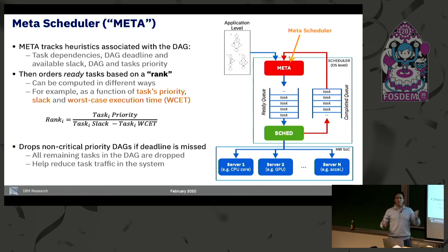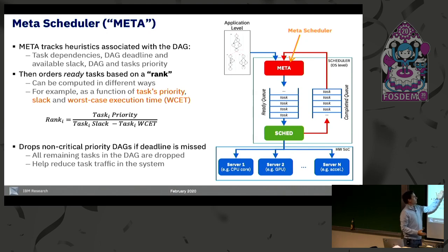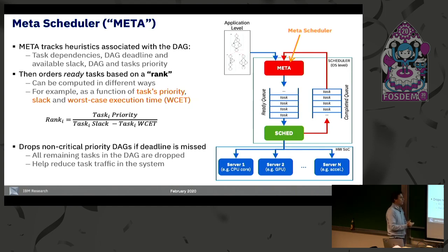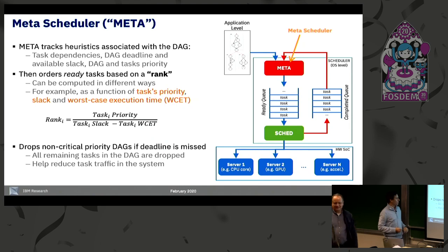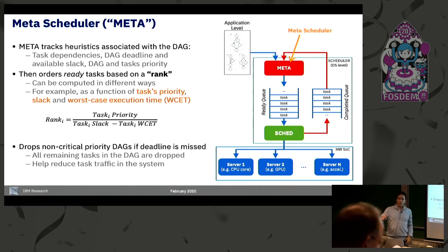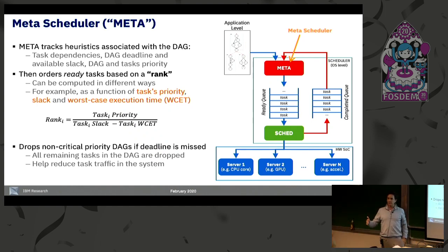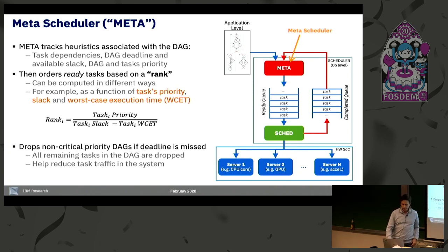How we compute rank is implementation-specific — the user can define what rank means. Usually rank is a function of task priority, the slack available, and the task's worst-case execution time, which is typically the time running on the worst processing element such as a CPU core. That is one possible formula; there could be many others. Also, Meta can optionally drop a DAG completely if it missed its deadline, in order to reduce traffic and give other DAGs more chances to complete on time.